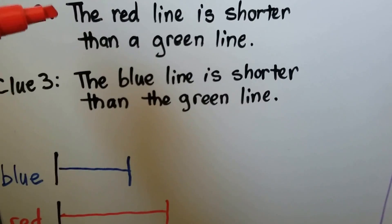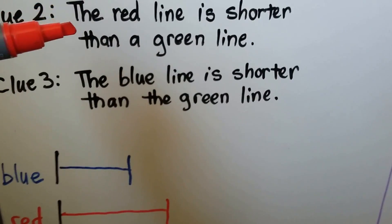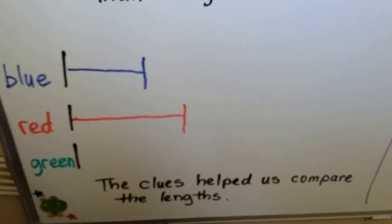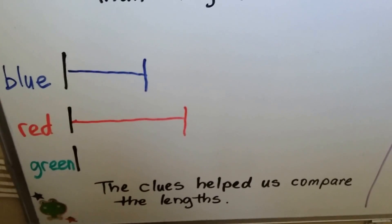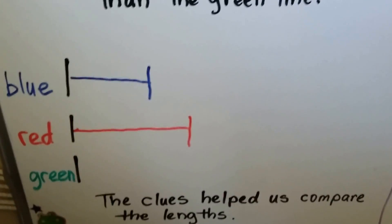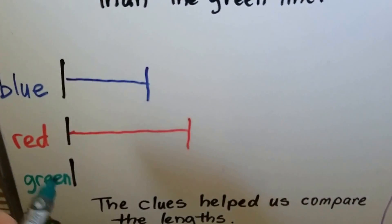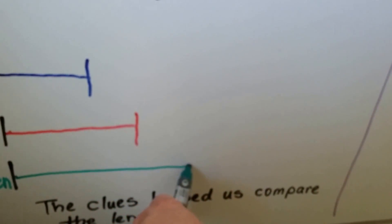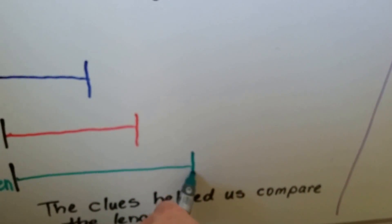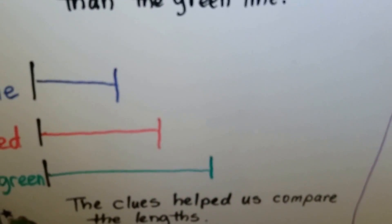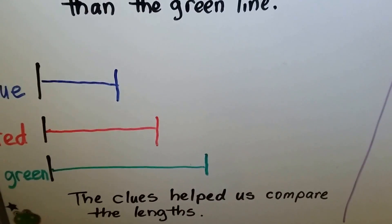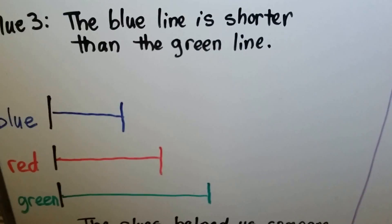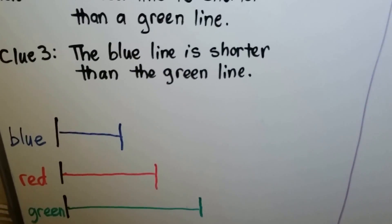It tells us the red line is shorter than a green line, so we can draw the green line. The red line needs to be shorter, so we make the green line longer than the red line. The clues helped us compare the lengths by telling us which one was shorter or longer.